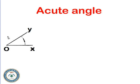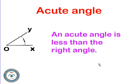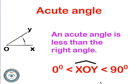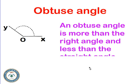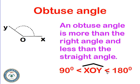An acute angle is less than the right angle, with a measure between 0 and 90 degrees — for example, 30°, 45°, 60°, or 70°. An obtuse angle is more than the right angle but less than the straight angle, so its measure is between 90 and 180 degrees — for example, 101°, 105°, 110°, or 120°.